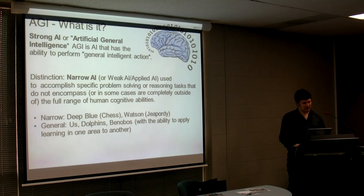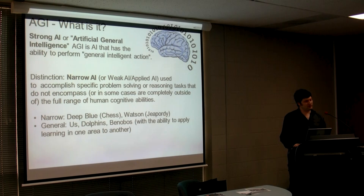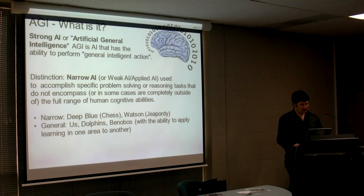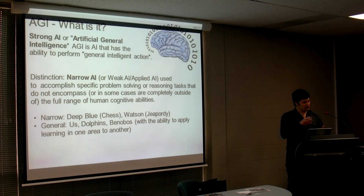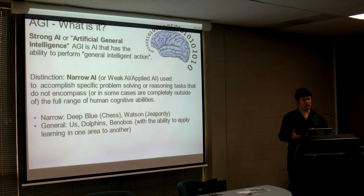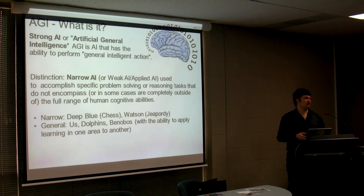We have examples: Deep Blue in the 90s beat Garry Kasparov at chess, which surprised a lot of people, as did Watson. We humans have general intelligence — we can learn chess and apply those learnings to checkers. But a computer specifically designed for chess wouldn't be good at checkers unless it was reprogrammed to do so.